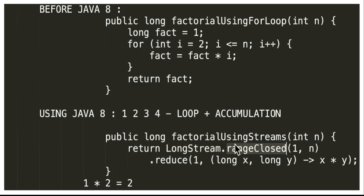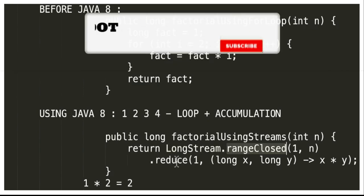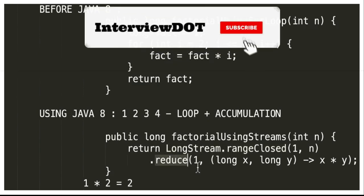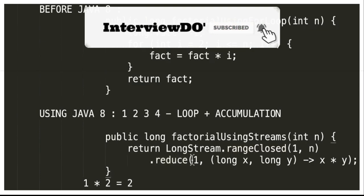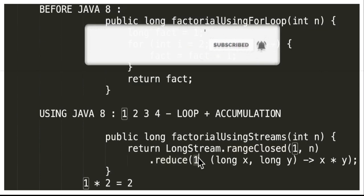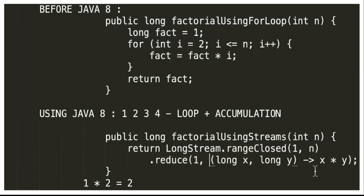LongStream.rangeClosed is equivalent to the for loop that we have here. Then we can use the reduce method. The reduce method takes the initial number, which is 1, and then we have to provide a lambda expression. We need to multiply the sequence of numbers, so if I give x and y, it has to multiply and store the result.